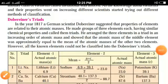In the year 1817, German scientist Döbereiner suggested that the properties of elements are related to their atomic masses.